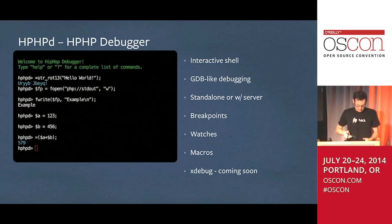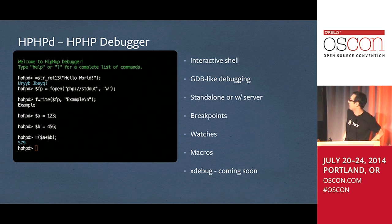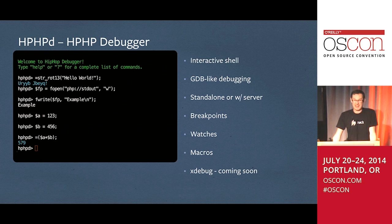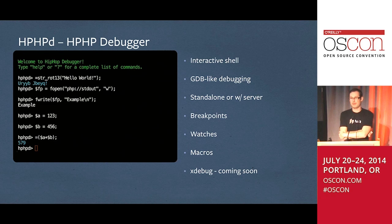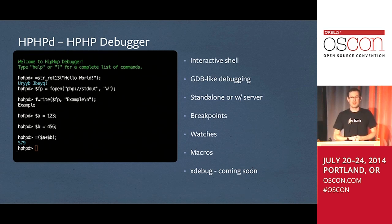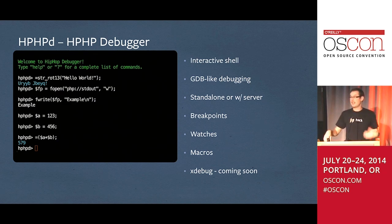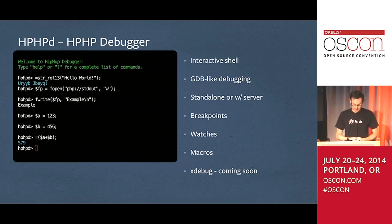HHVM also has a debugger — HPHPD. You can use it as a normal REPL like Python, printing variables and trying functions. You can also connect to your running sandbox, set breakpoints, step through code, print variables, and set watchpoints. An intern is also building Xdebug support, so if you use an editor that uses Xdebug, that will help.